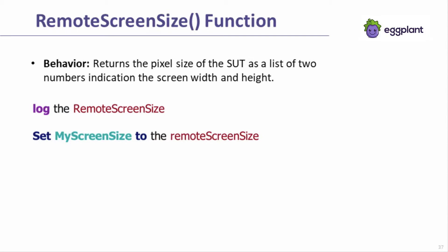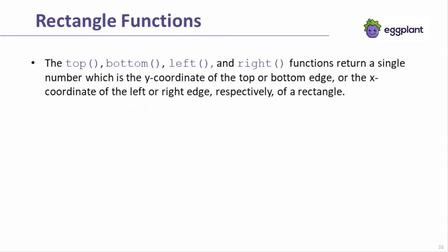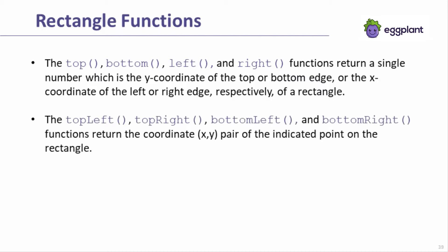The remote screen size function returns the pixel width and height of the SUT. Please note that there's also a remote screen rectangle function. There's a set of rectangle functions that make working with the return of the image rectangle easy. The top, bottom, left, and right functions return a single coordinate that represents the edges of the rectangle. The top and bottom functions return a Y coordinate, and the left and right functions return an X coordinate. Top left, top right, bottom left, and bottom right return XY coordinate pairs that represent points on the rectangle. For example, top left returns the coordinate pair for the top left corner of the rectangle.